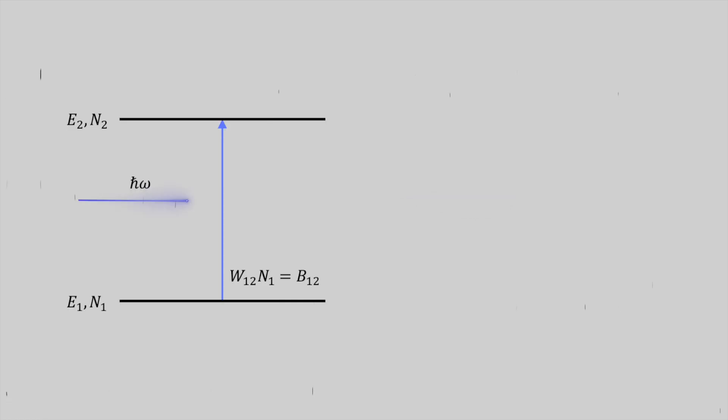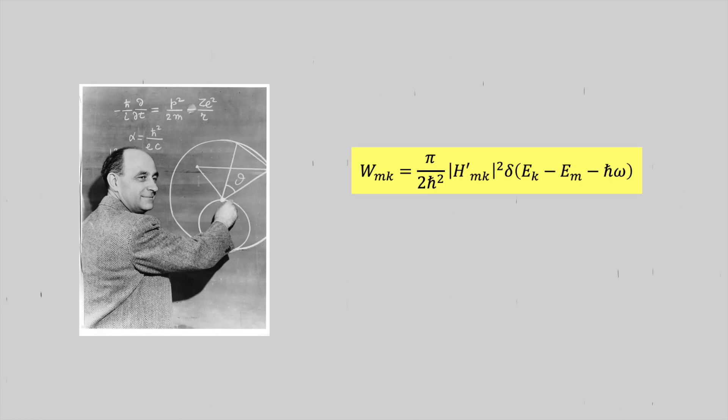We can describe absorption and stimulated emission using B12 and B21 respectively. The Bs are both equal to their respective population N, so the number of electrons at a certain energy level, times their atomic transition probability, W. So this transition probability is derived from Fermi's golden rule.